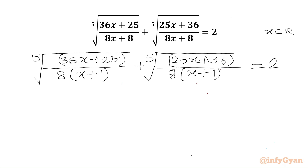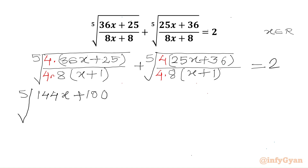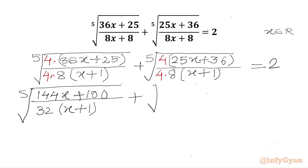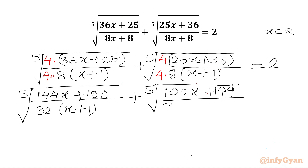Now we will multiply numerator and denominator for both radicands by 4. Here also we will multiply with 4 in the numerator and denominator. Now I will write our equation: fifth root of 4 times 36 is 144x. 4 times 2500 over 4 times 8 is 32 times x plus 1, plus fifth root of 4 times 25. 4 times 25 is 100x plus 144 over 32 times x plus 1. The RHS is 2.